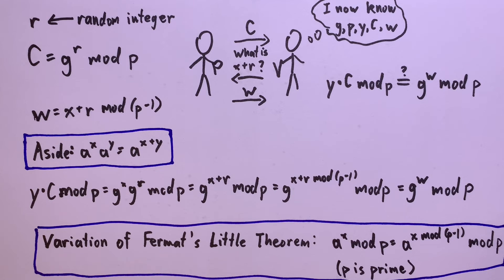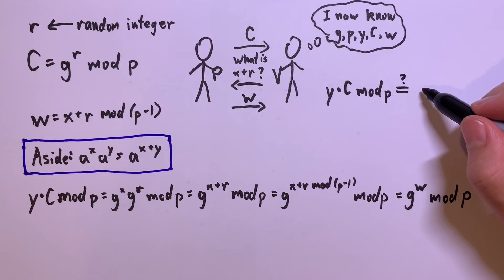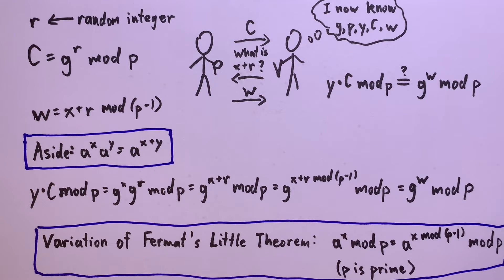If you provide w to the verifier, they can verify that y times c mod p equals g to the w mod p. If that holds, then you pass the test. Cool!